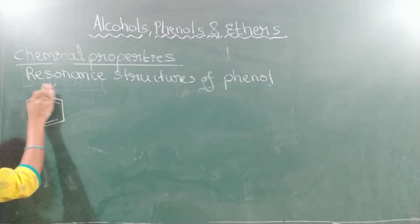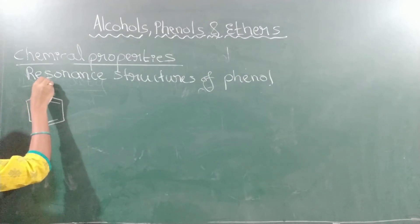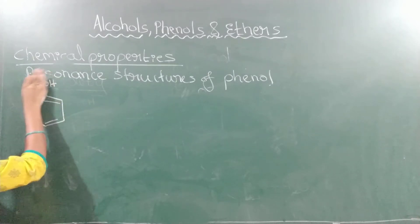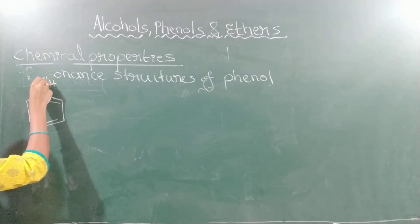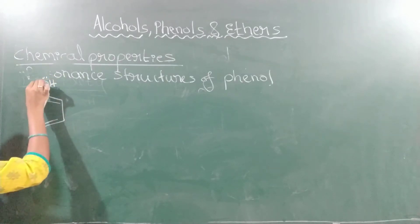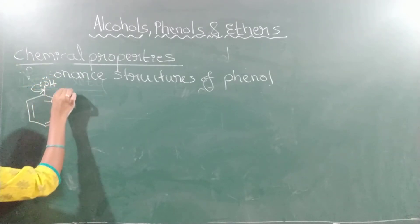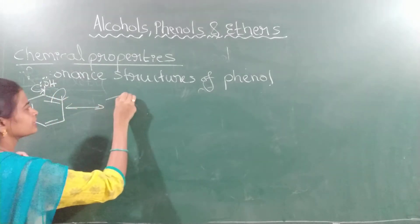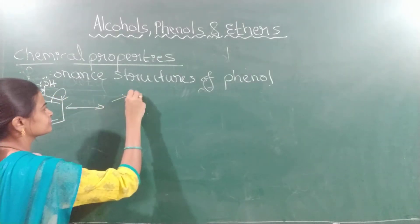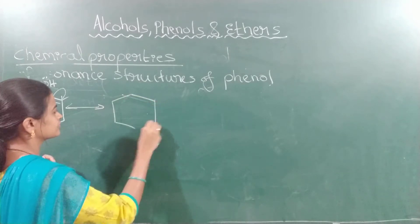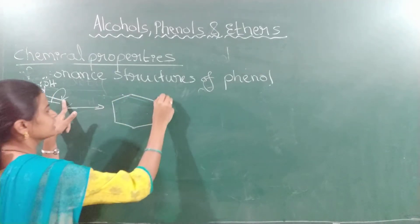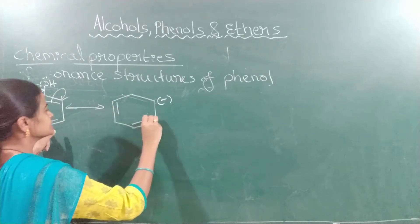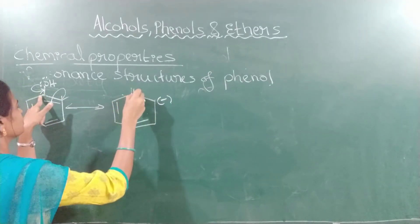Phenol shows the plus R effect. Oxygen carries two lone pairs of electrons, and this pi bond will shift to the second carbon atom. Here electron density is increased. These two bonds remain as they are, and here a partial double bond is formed.